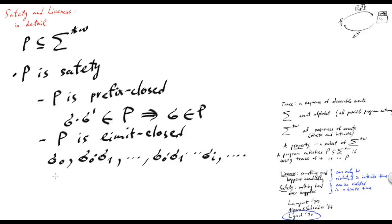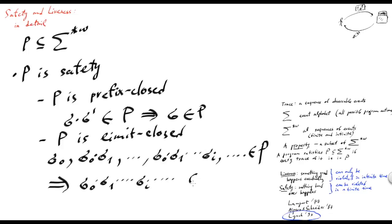So we have also that all of these traces are in P. It follows that the infinite limit of this sequence of traces — the infinite trace of the form sigma-0 extended with sigma-1 extended with sigma-i, etc. — also belongs to P. So when a property is prefix-closed and limit-closed, we say that this is a safety property.